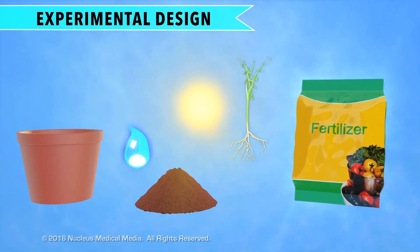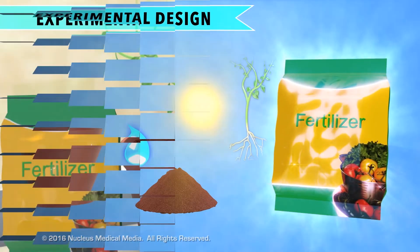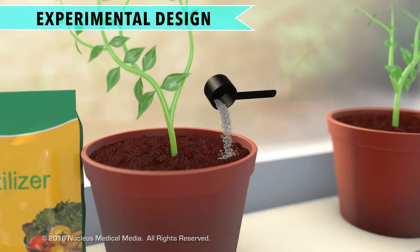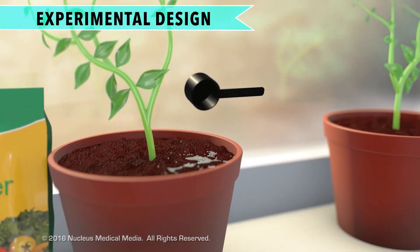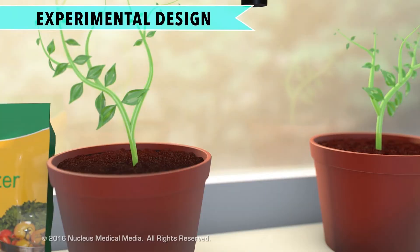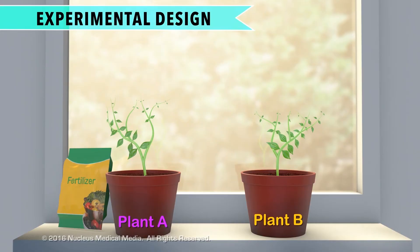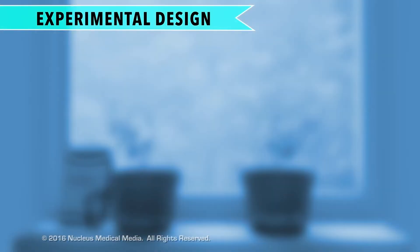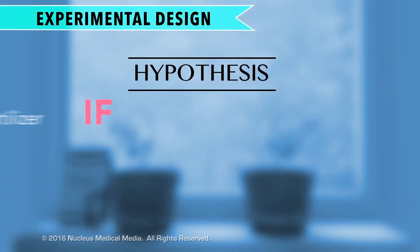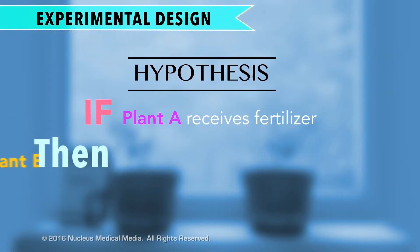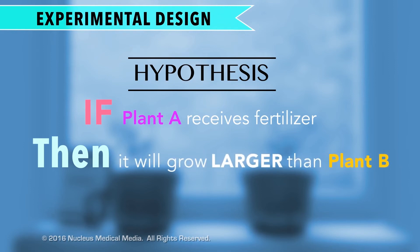So what would be different? In this experiment, the only difference is that only Plant A would get the fertilizer. Remember, your hypothesis is that Plant A, which is getting fertilizer, will grow bigger compared to Plant B, which isn't getting any fertilizer.